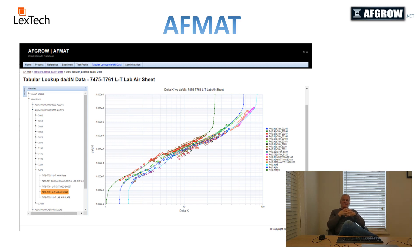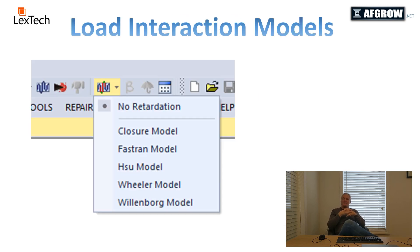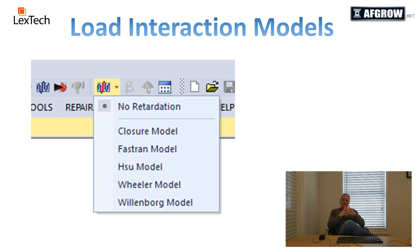AFGRO includes five crack retardation or load interaction models. These include the closure model, FASTRAN, the SU model, Wheeler, and the generalized Willenborg model.